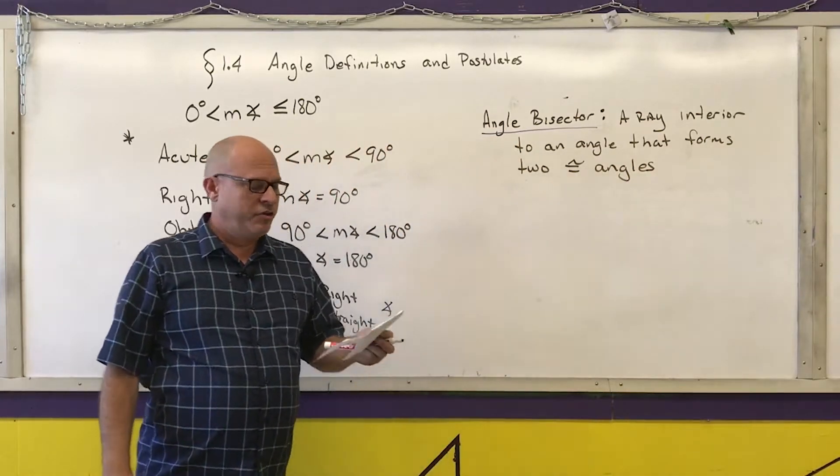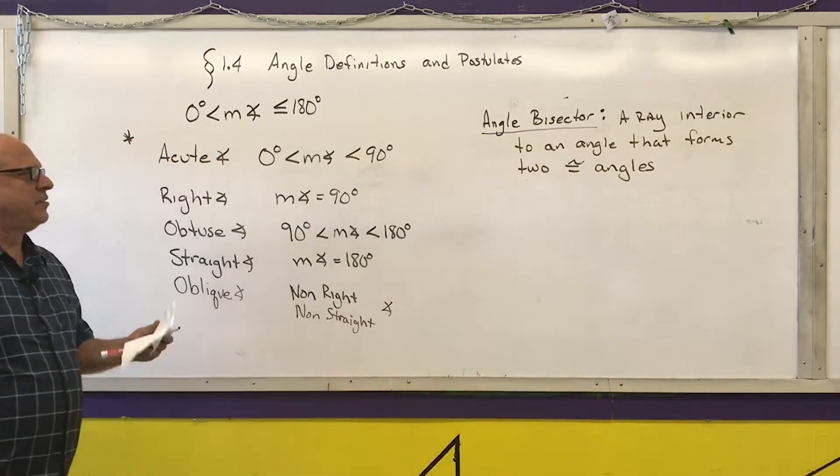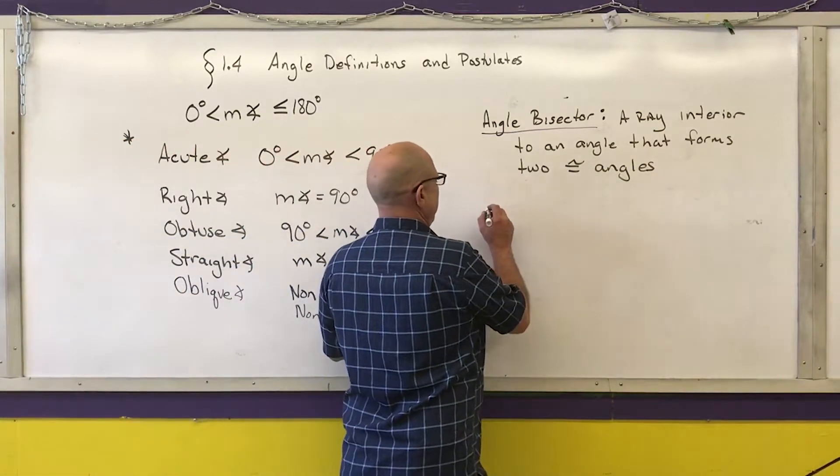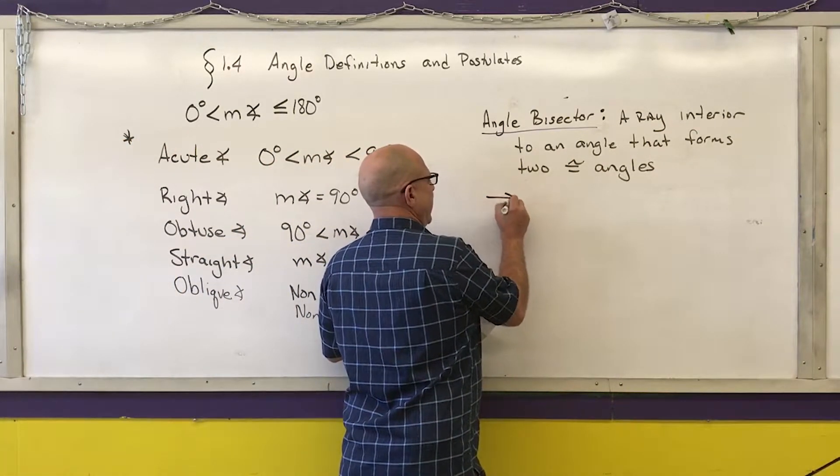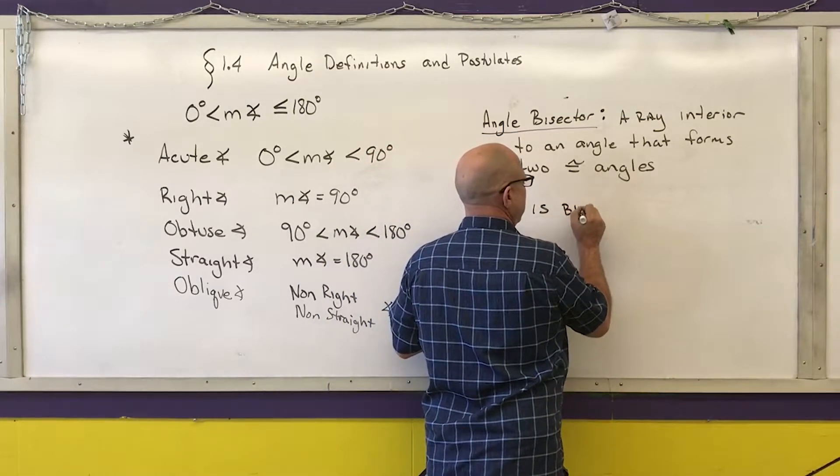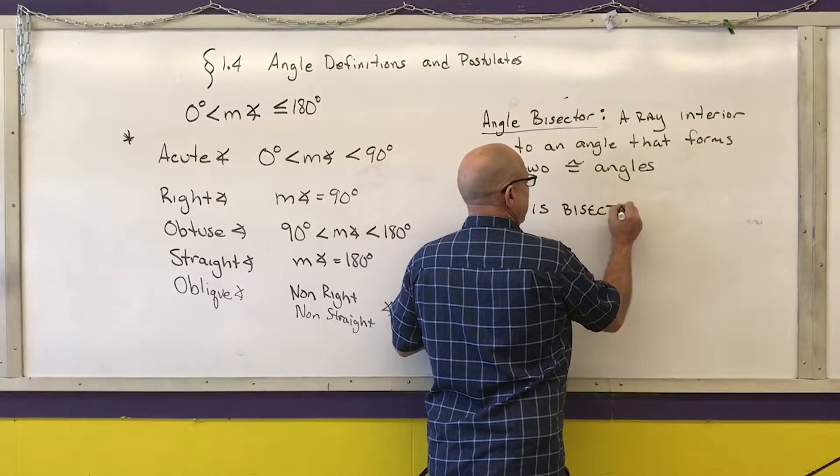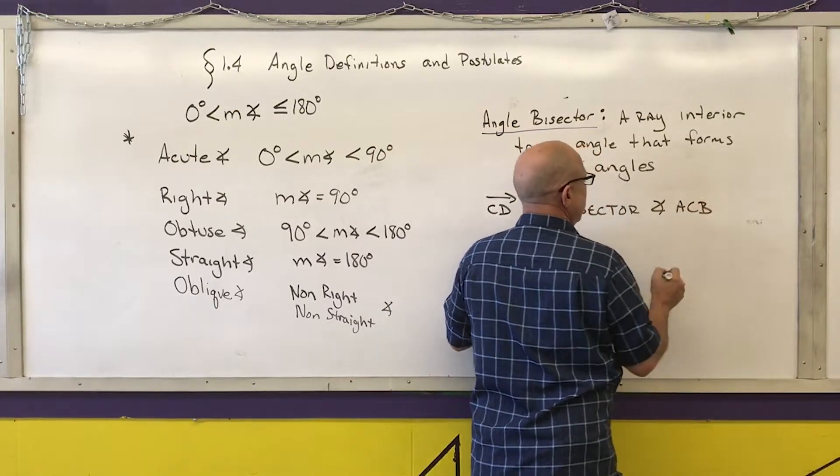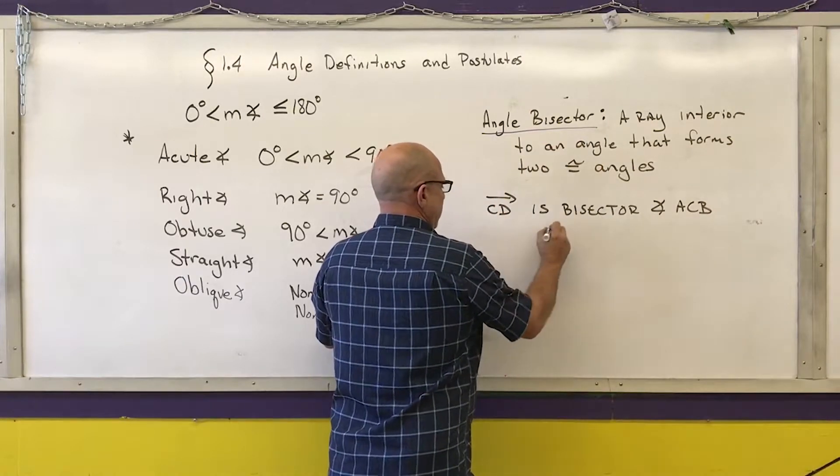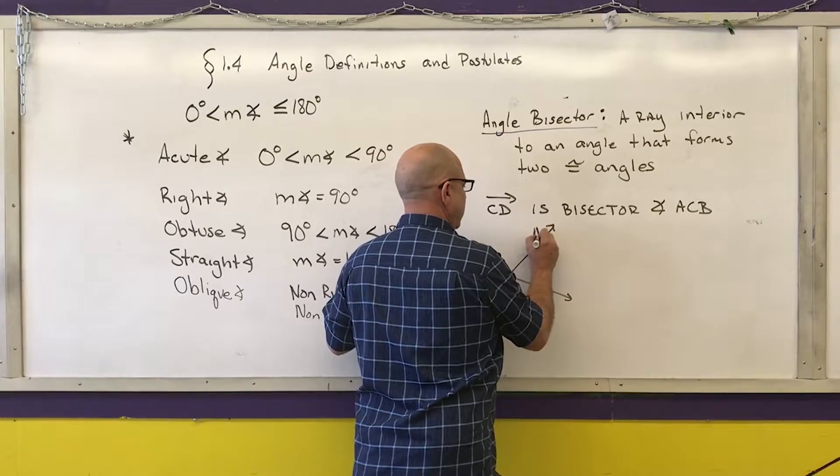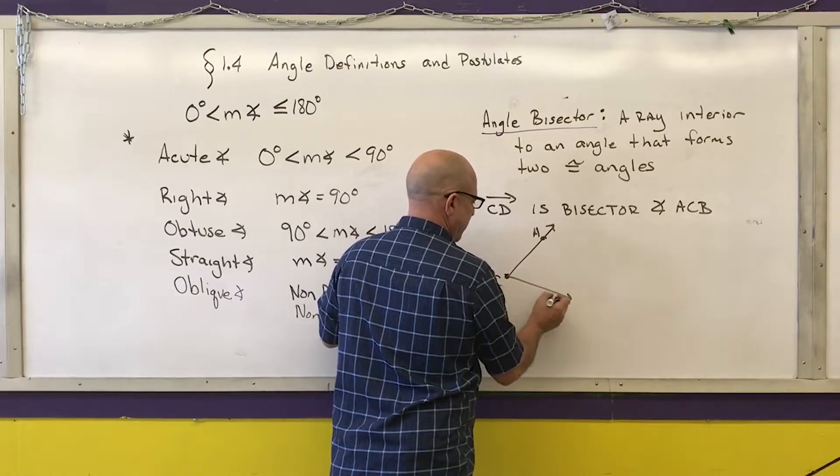And if two angles are congruent that means that their measurements are the same. So if I call, if I say that ray CD is the bisector of angle ACB, let's draw that really quick. So here's ACB.